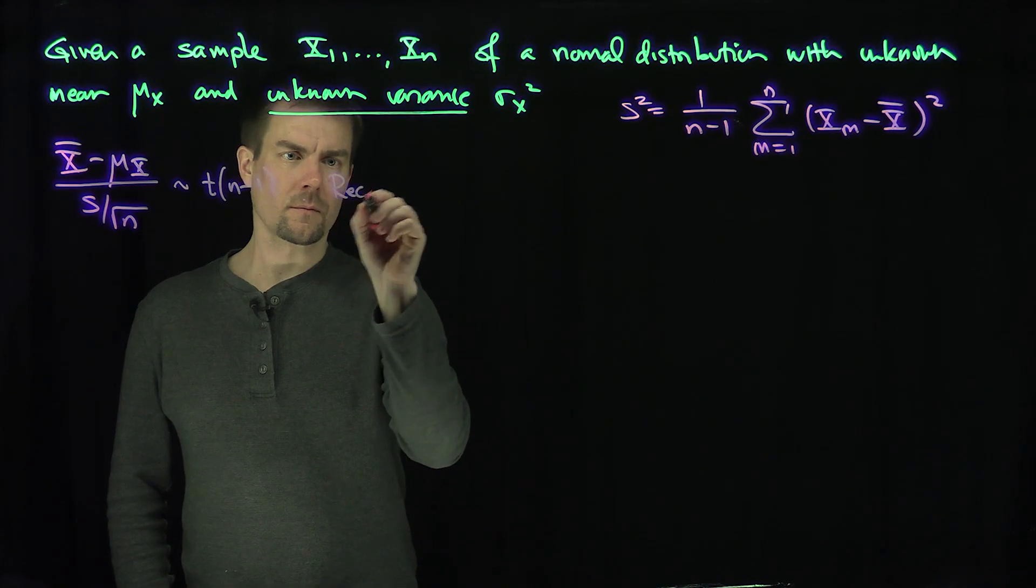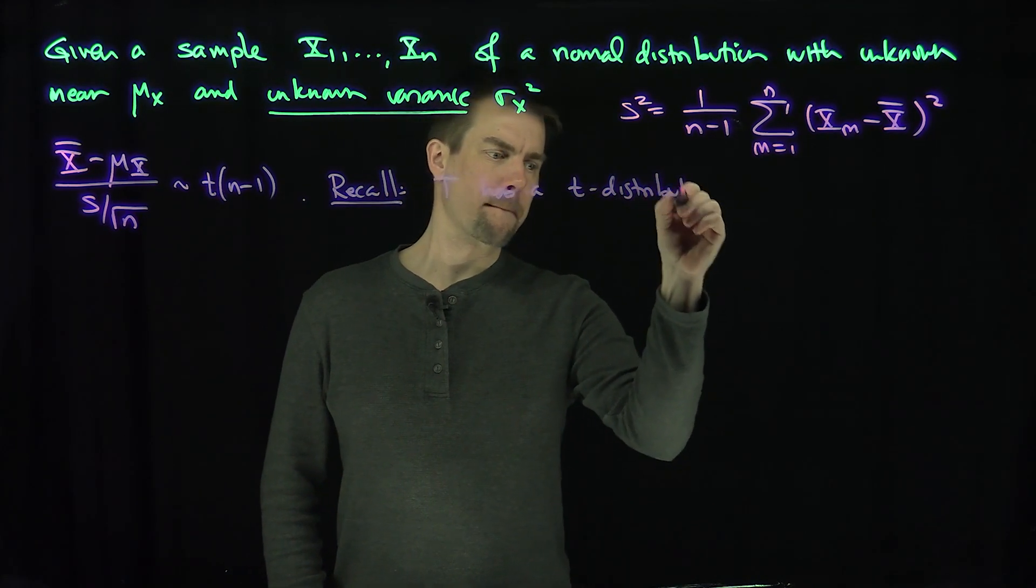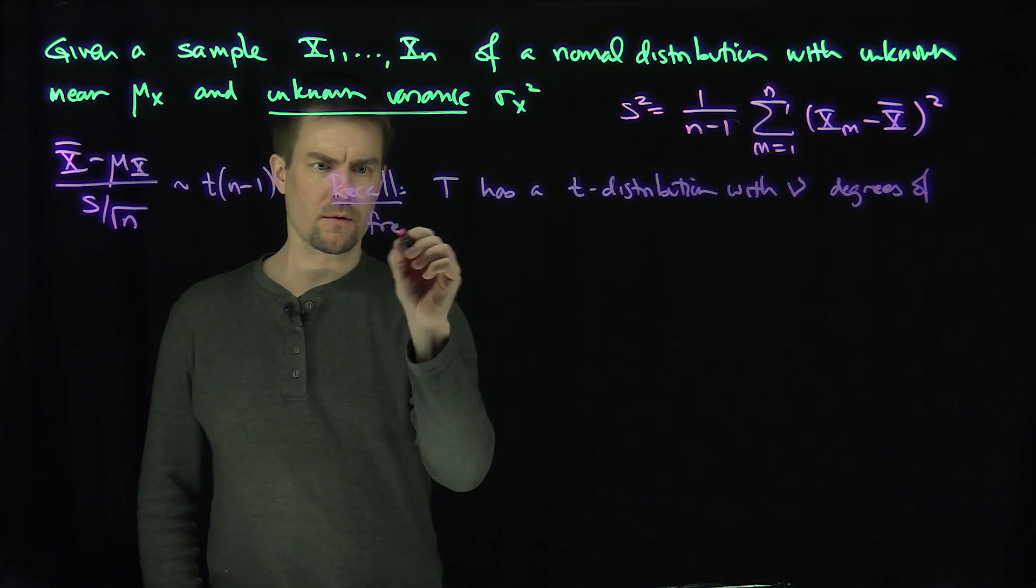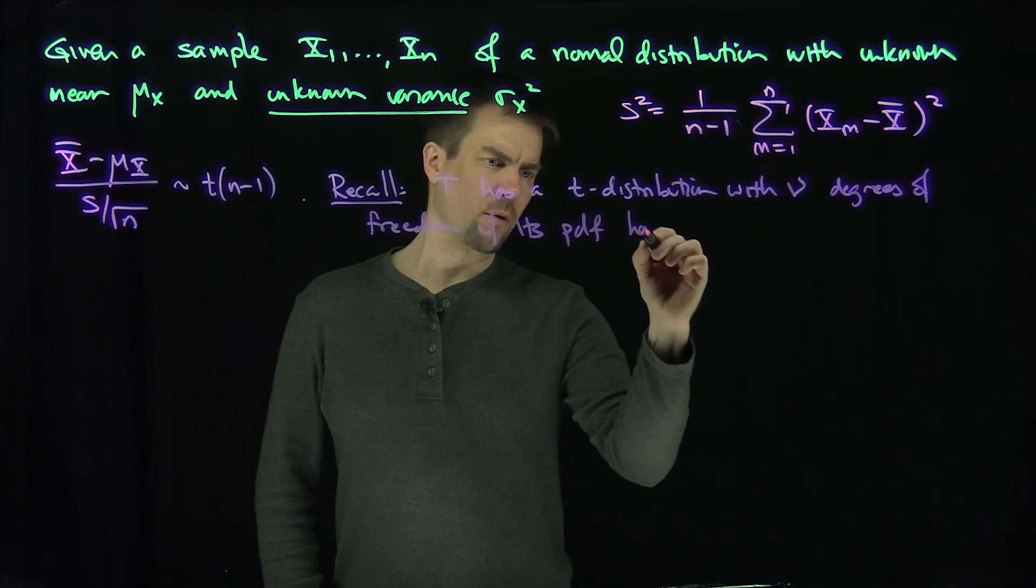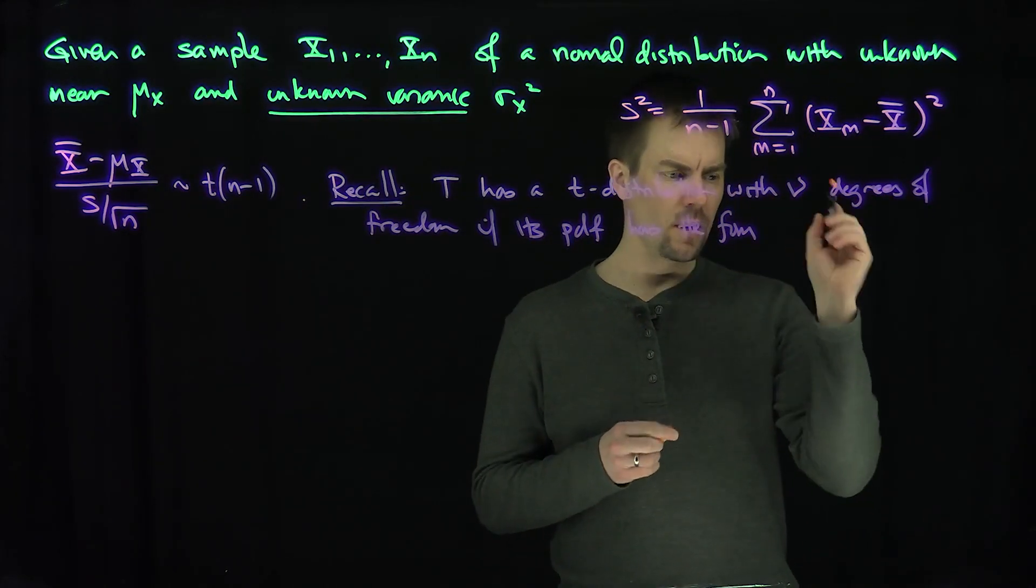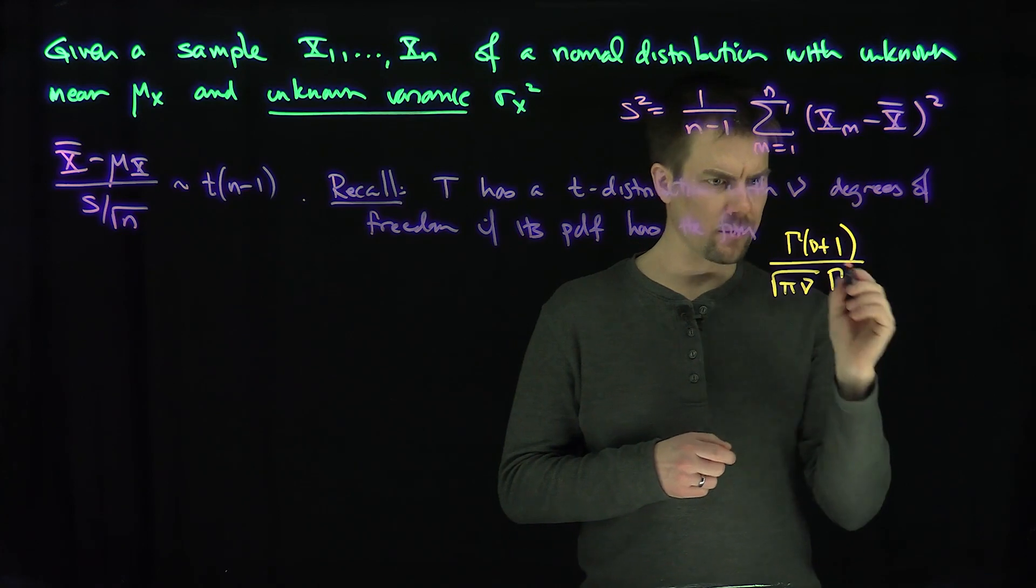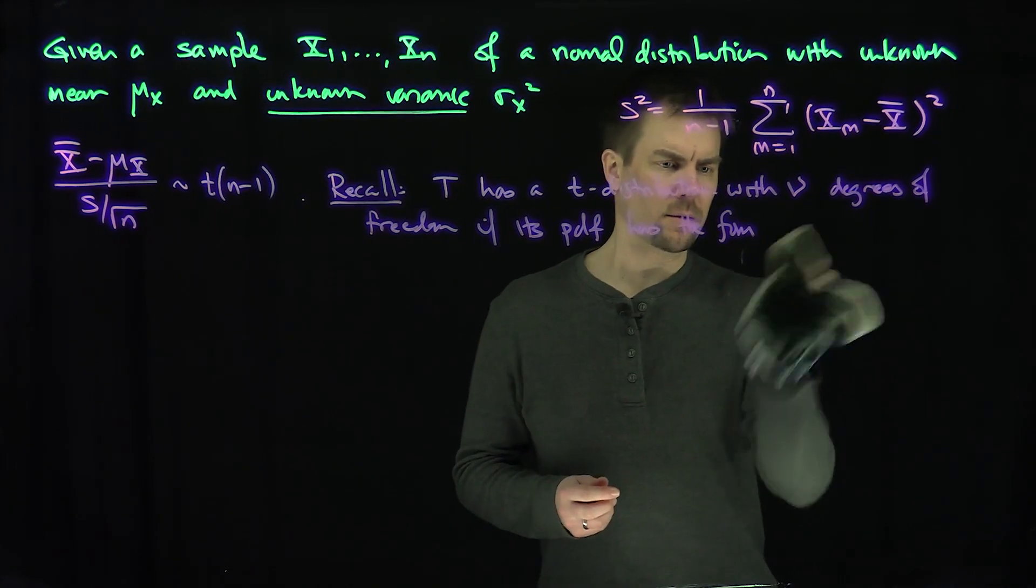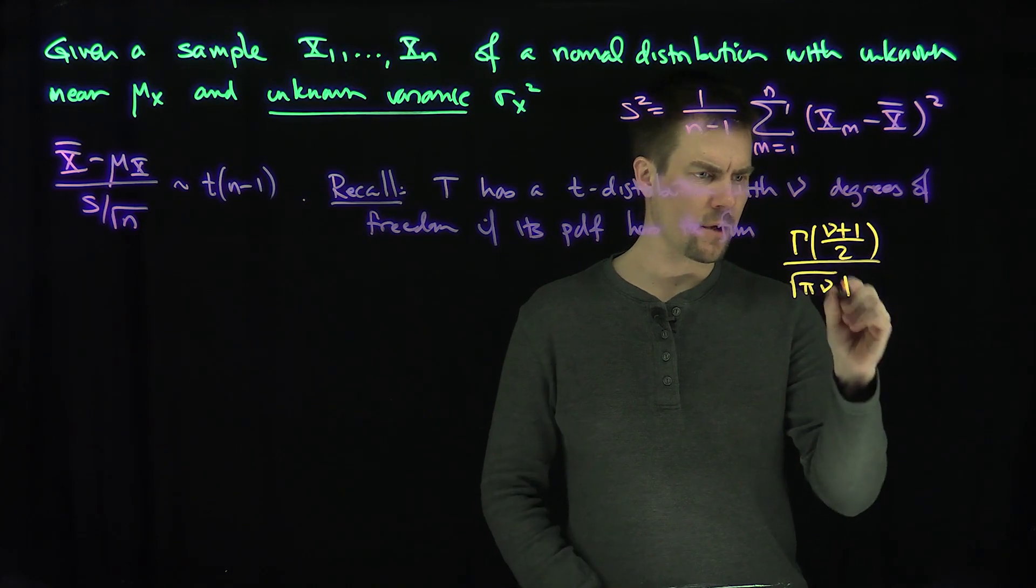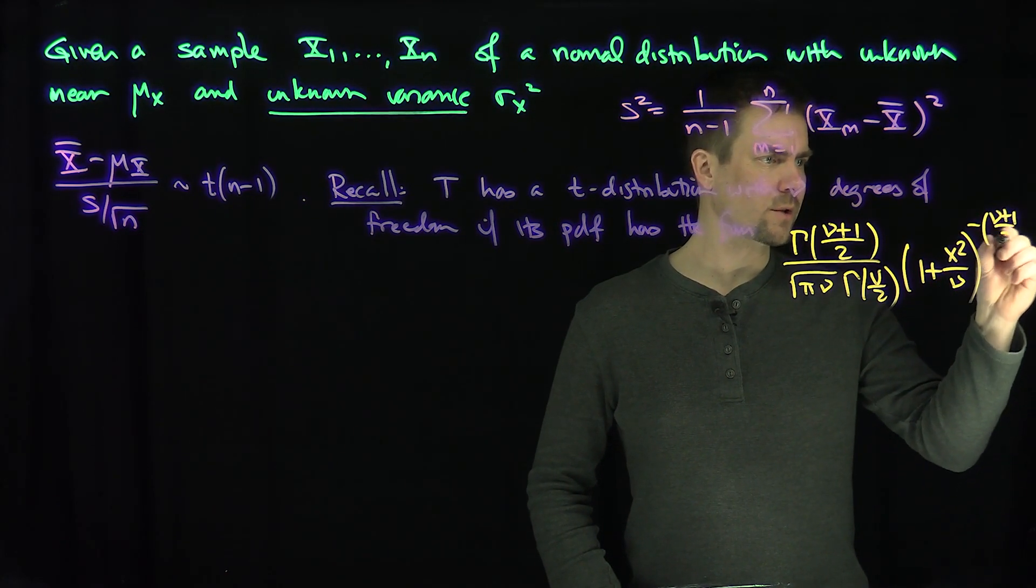And recall that t has a t-distribution with nu degrees of freedom if its pdf has the form: looks like gamma of nu plus 1 over 2 over the square root of pi nu gamma of nu over 2, because I have to have fractional powers, and then 1 plus x squared over nu raised to the power of negative nu plus 1 over 2.